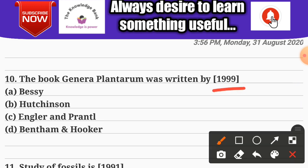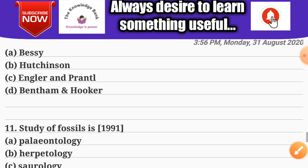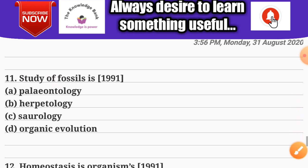Question number ten: the book 'Genera Plantarum' was written by — asked in 1990. Options: A) Bessey; B) Hutchinson; C) Engler and Prantl; D) Bentham and Hooker. The correct answer is D — Bentham and Hooker.